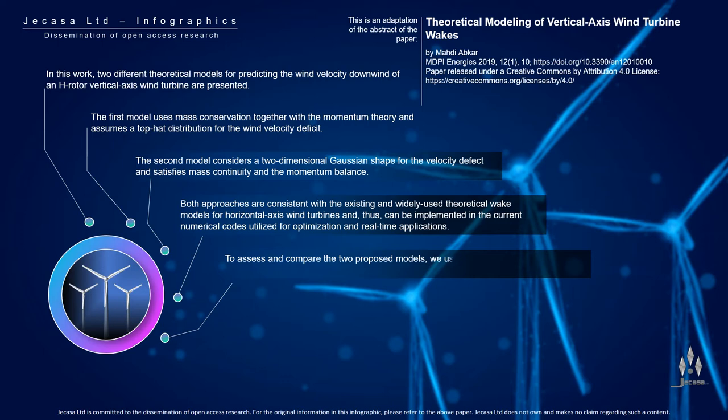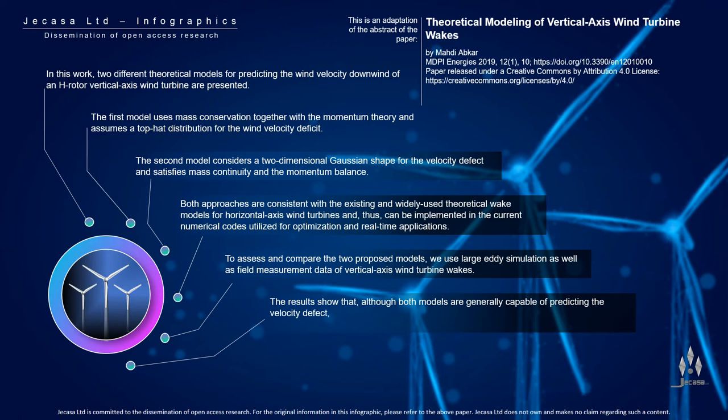To assess and compare the two proposed models, we use large eddy simulation as well as field measurement data of vertical axis wind turbine wakes. The results show that although both models are generally capable of predicting the velocity defect, the prediction from the Gaussian-based wake model is more accurate compared to the top-hat counterpart.